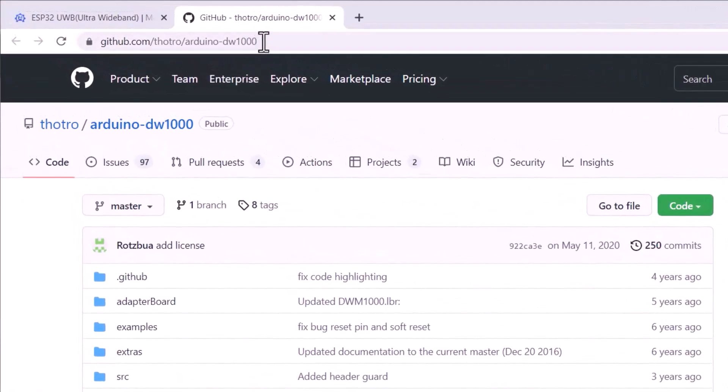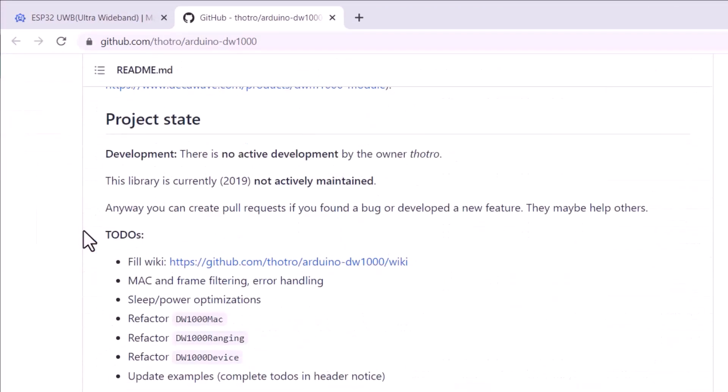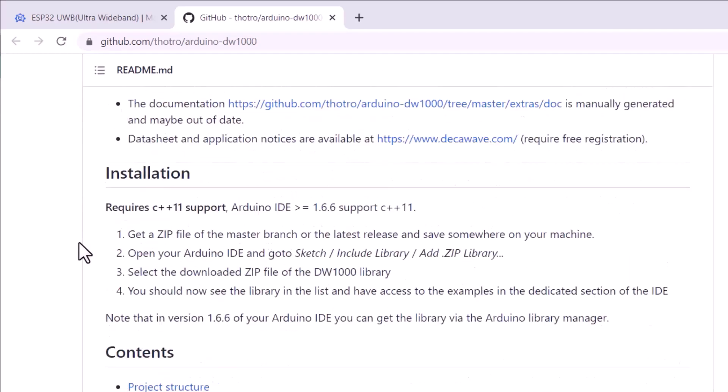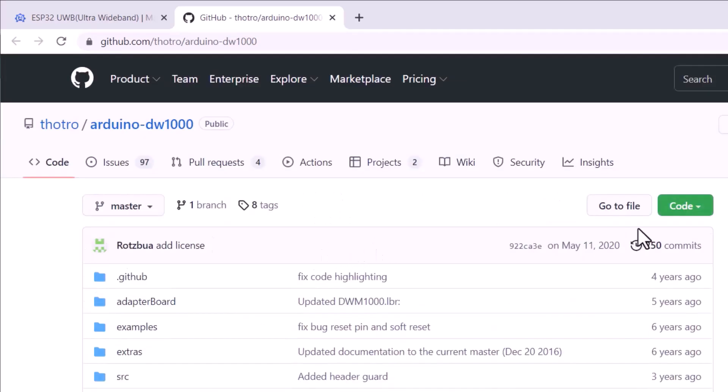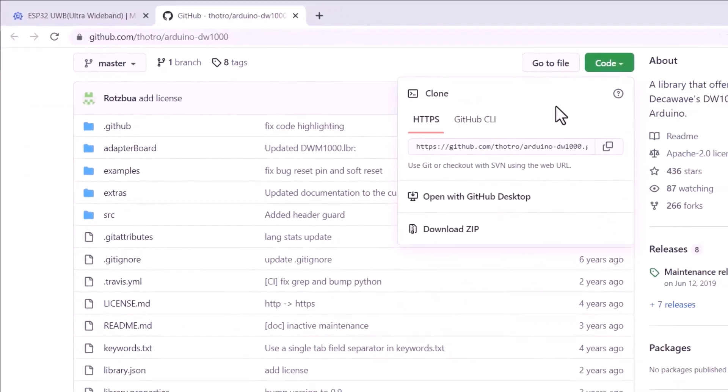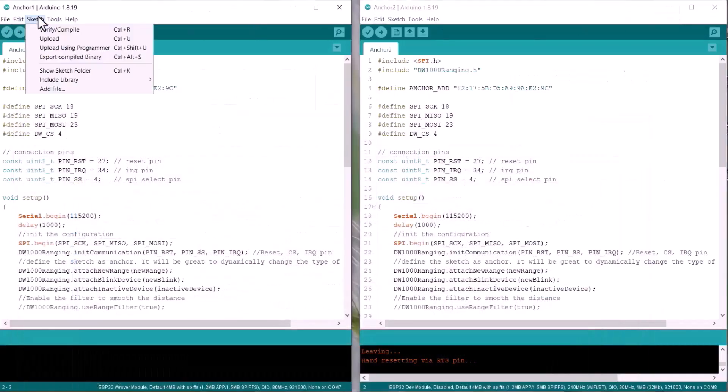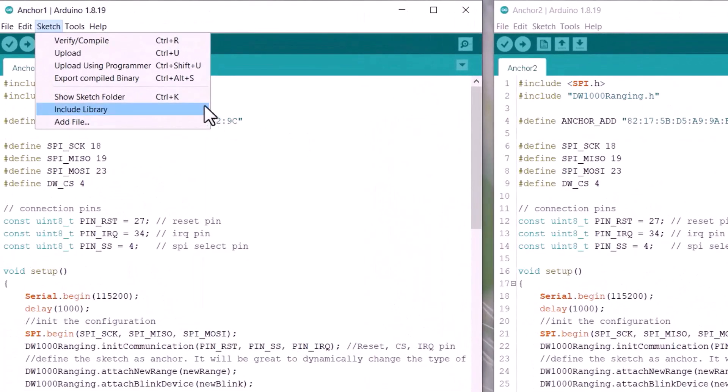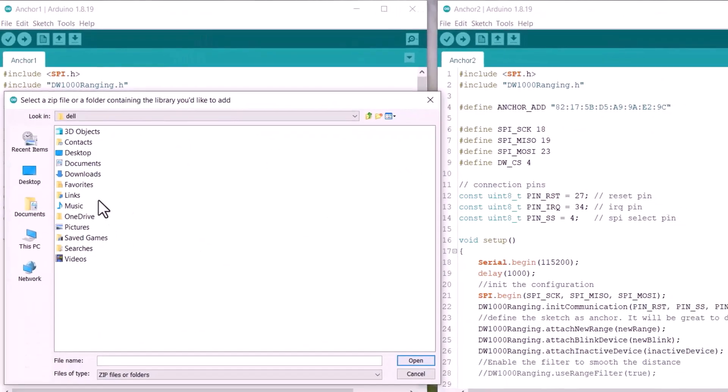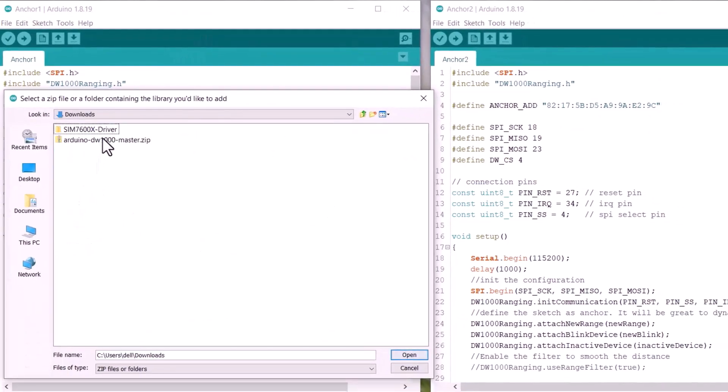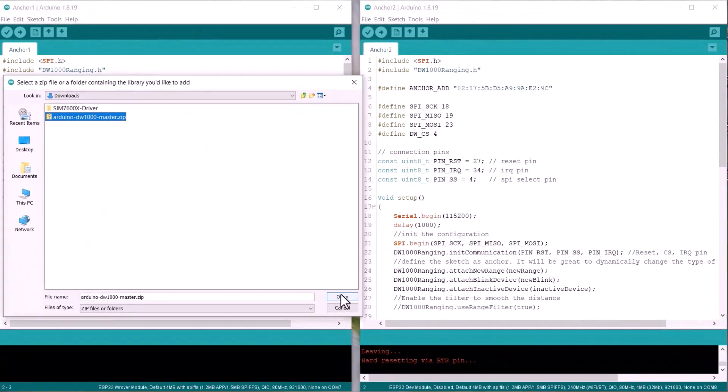Go to this GitHub repository and you will be able to see a library written by Thothro. Detailed information in this library can be found here. But for now, all you need is to download this library. After downloading, go back to the Arduino IDE. Then add this library using the add zip library function. I have already added this library.